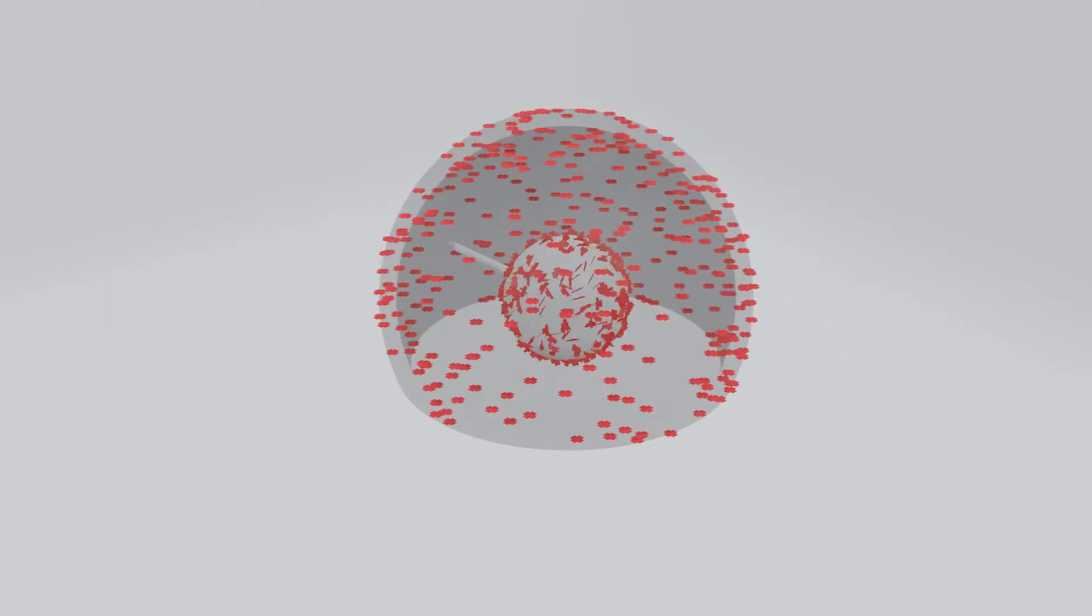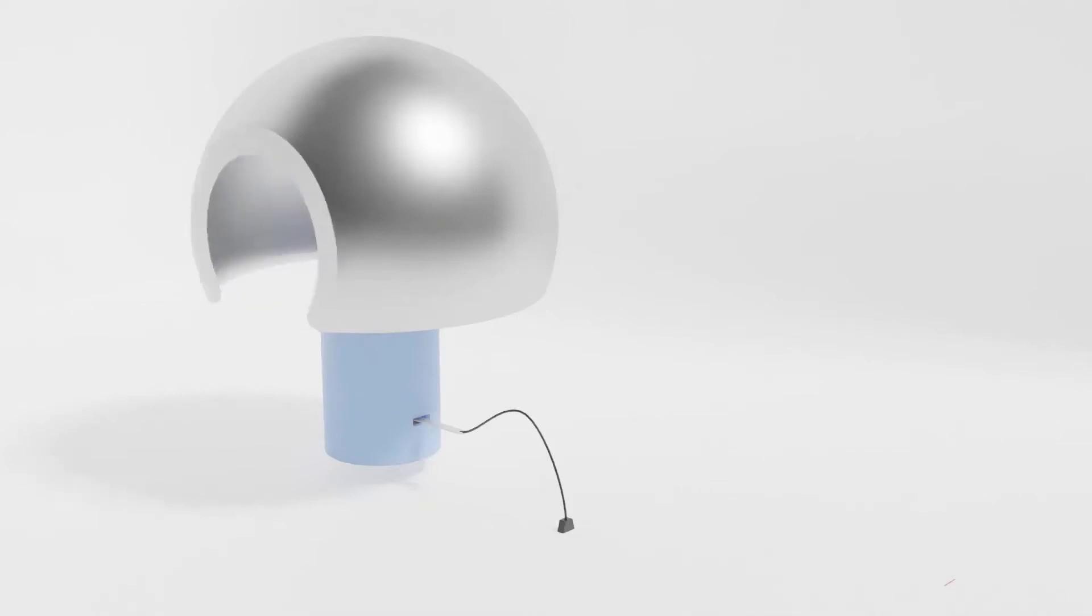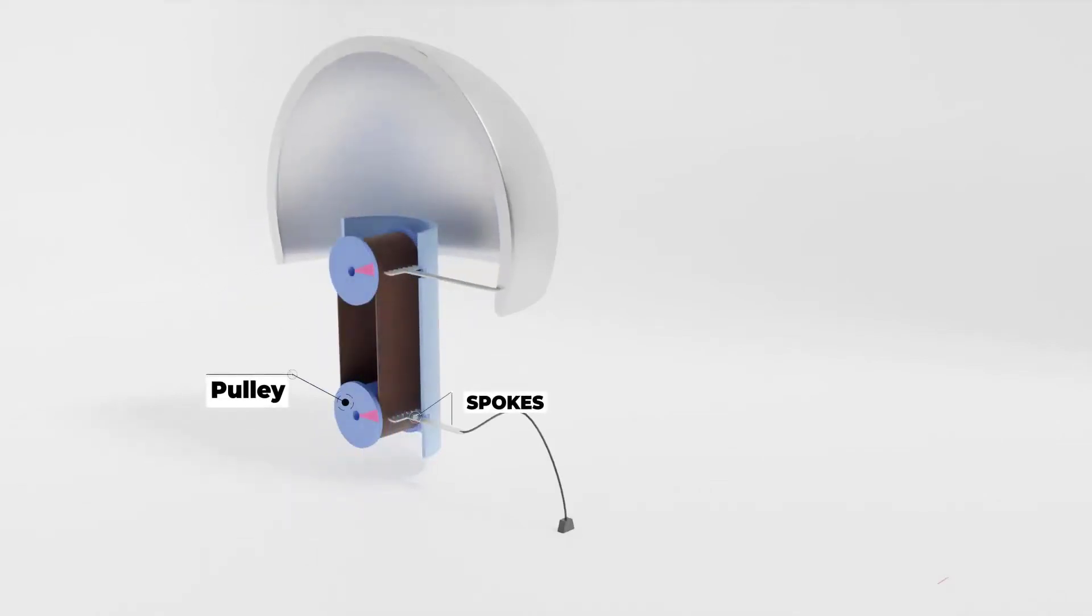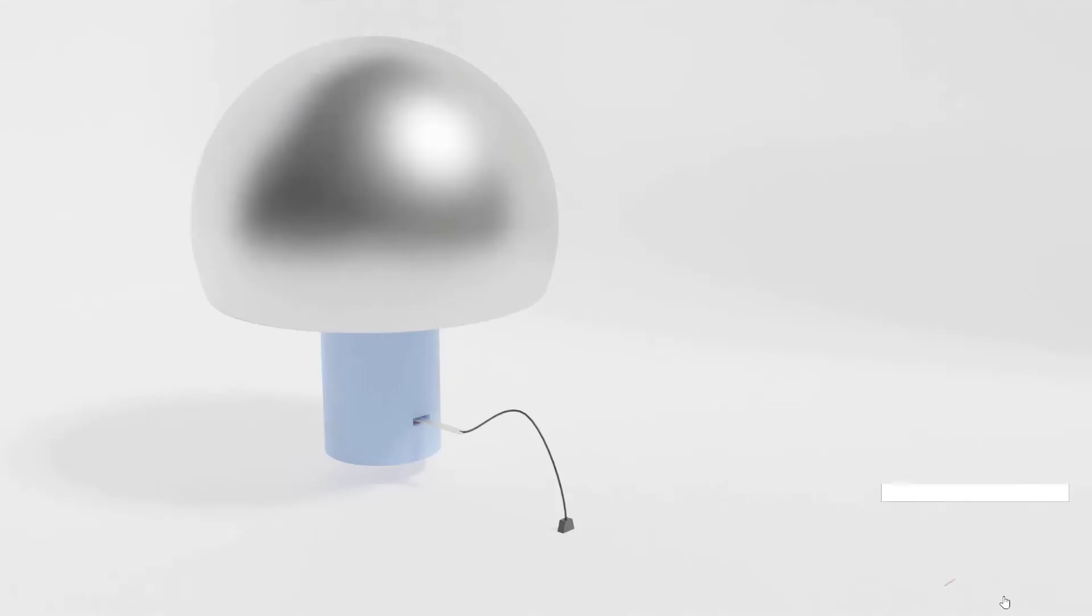Construction of Van de Graaff Generator: It contains spokes, pulley, rubber belt, insulating supporting column, and hollow sphere.